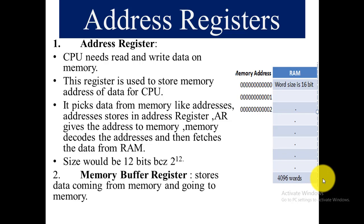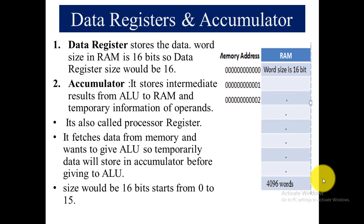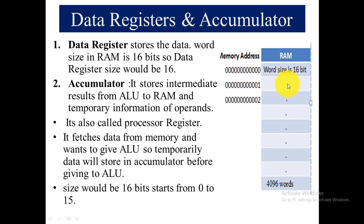The second is the memory buffer register. It stores data coming from memory and data that is going to memory — it stores all the information about such data. Next, the data register stores the data. The word size in RAM is 16 bits, so the data register size is also 16 bits, running from bit 0 to bit 15.